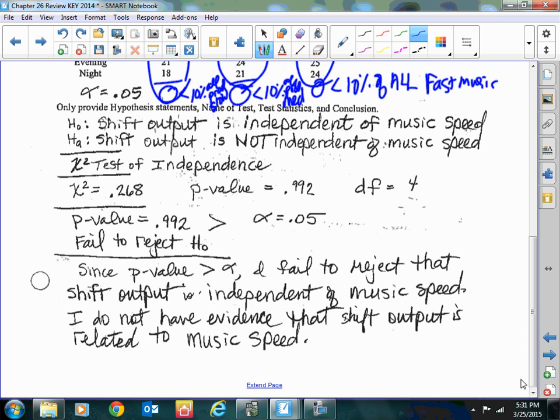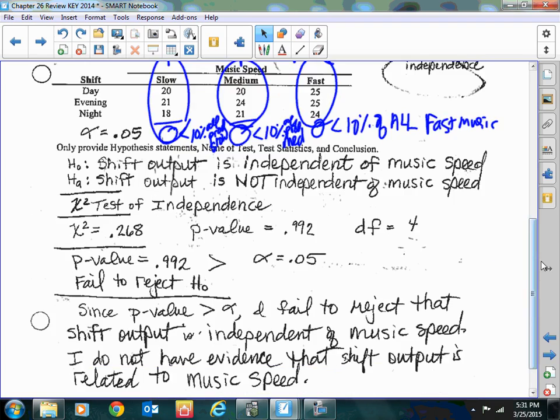Chi-squared test of independence: there's my chi-squared, my p-value was very large, so I definitely failed to reject. I definitely do not have evidence that the music speed affects production. When is that through - number 19, let's stop there.